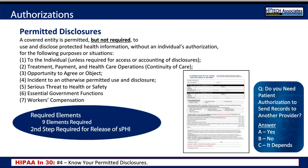When records are going outside of TPO, make sure that the authorization has all nine required elements, and that any sensitive protected health information is given a separate release or a second step by the patient before releasing that information.